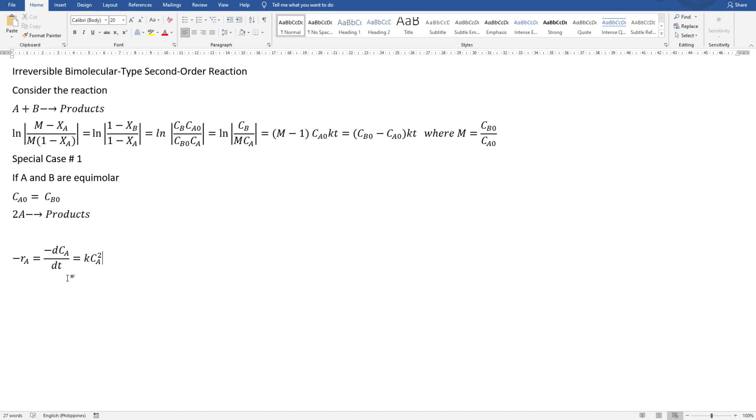The rate of reaction for A now becomes negative dCA over dt equals k CA squared. And since it's just all CA and t, two variables, we could just use separation of variables.